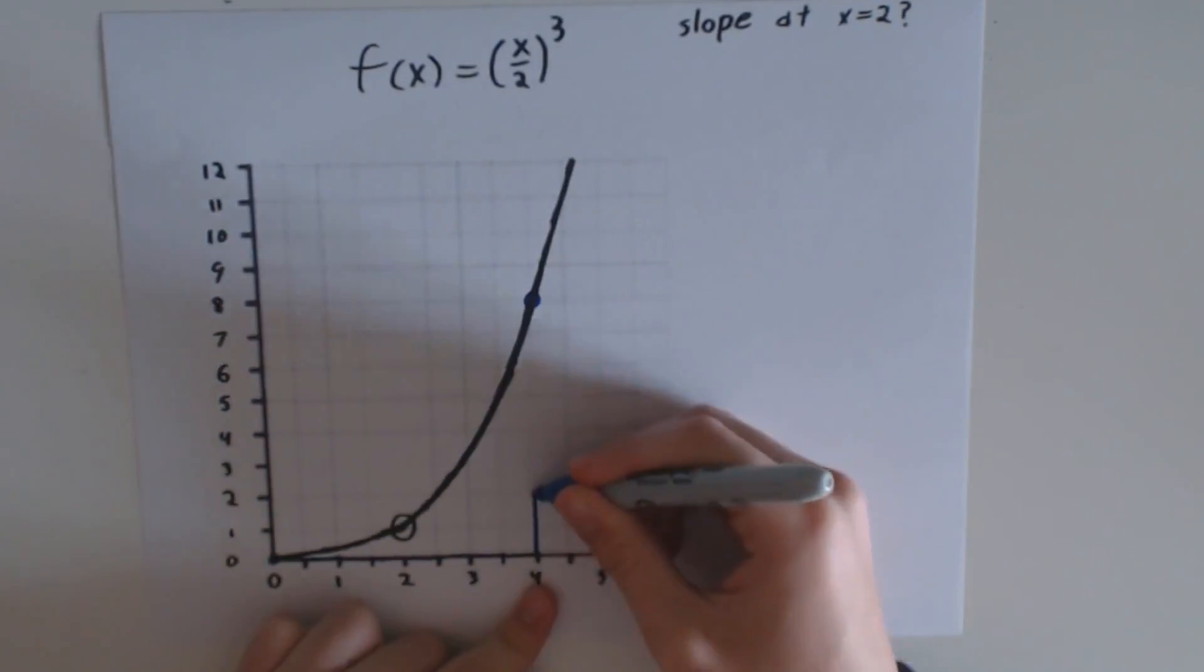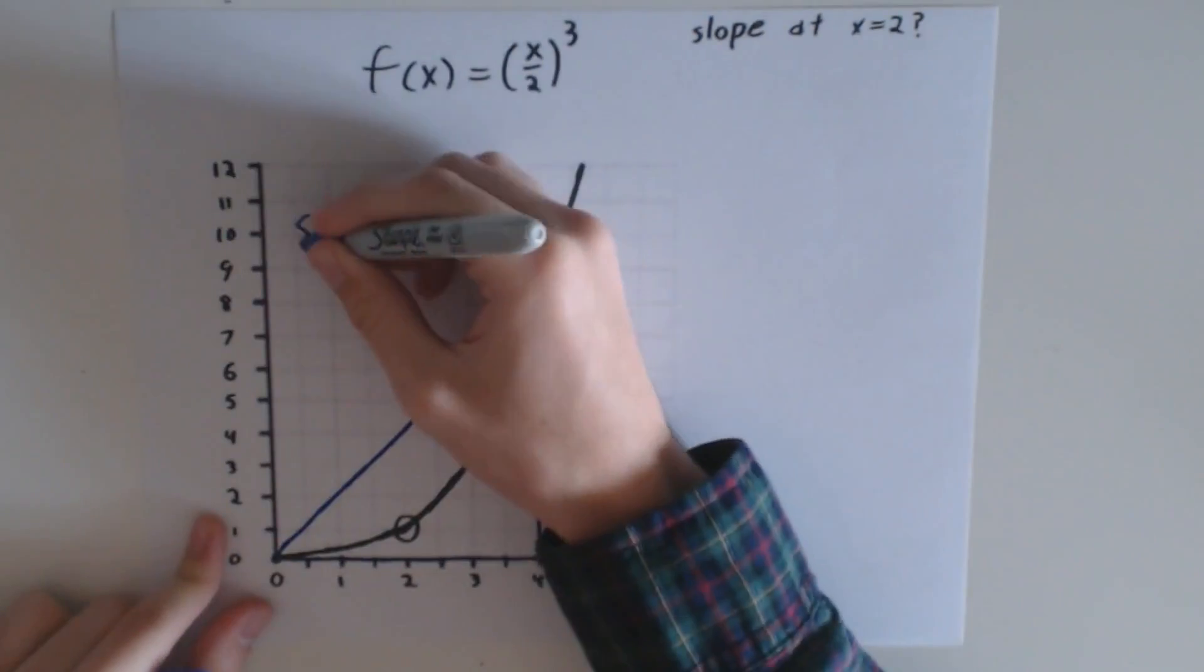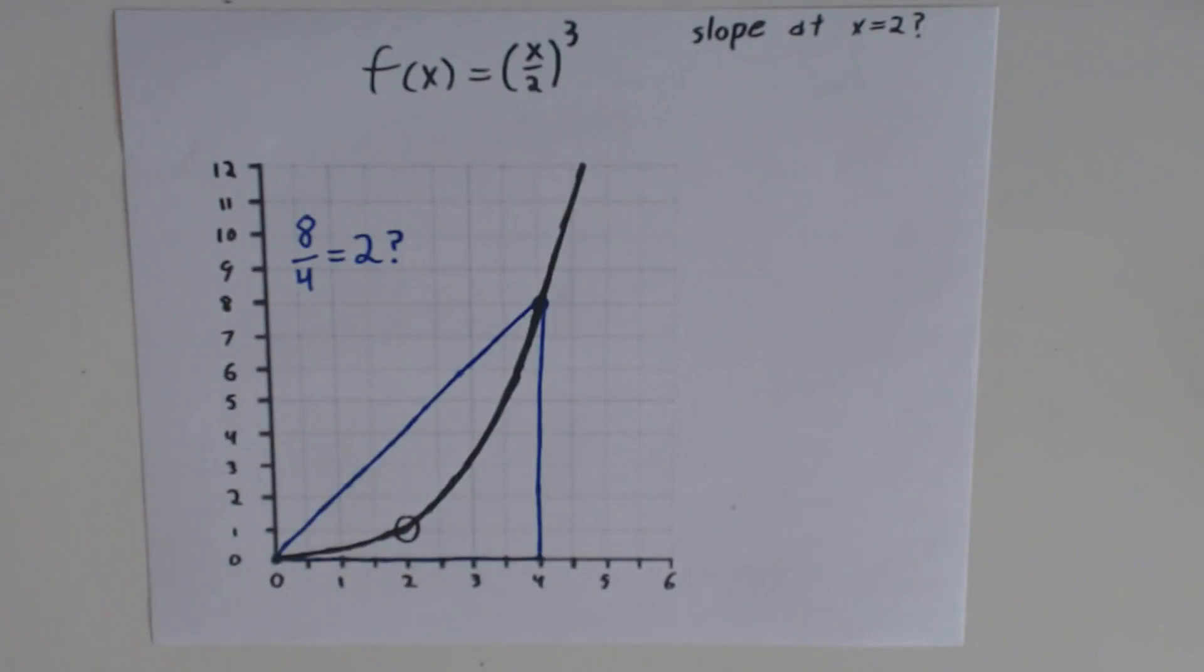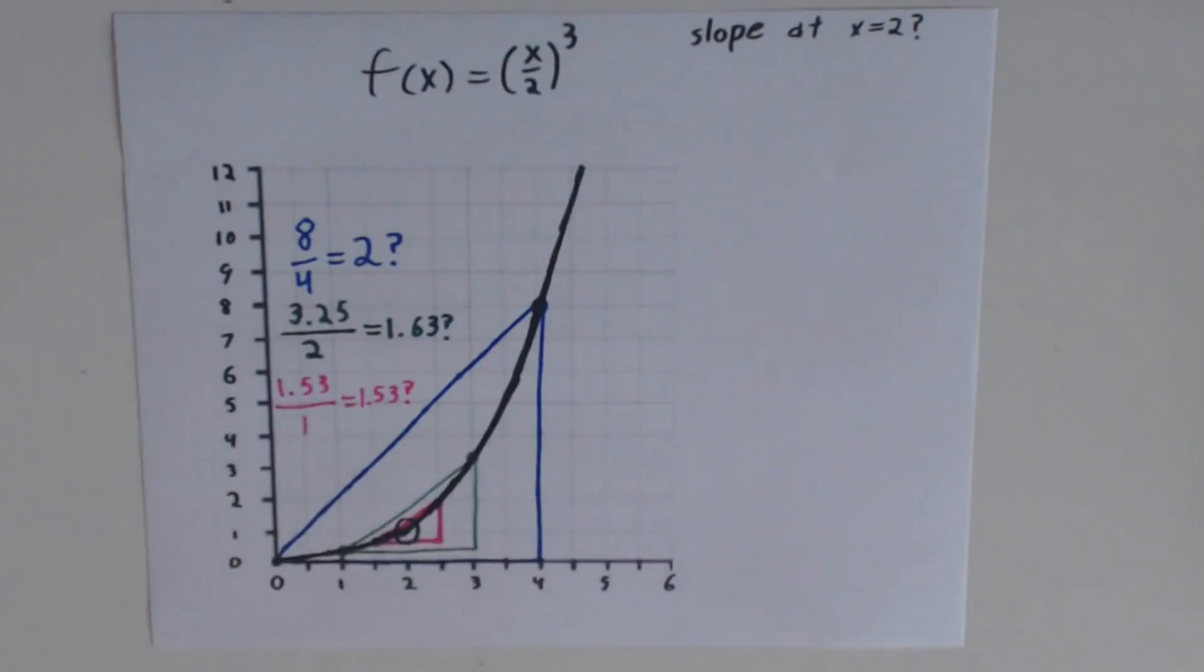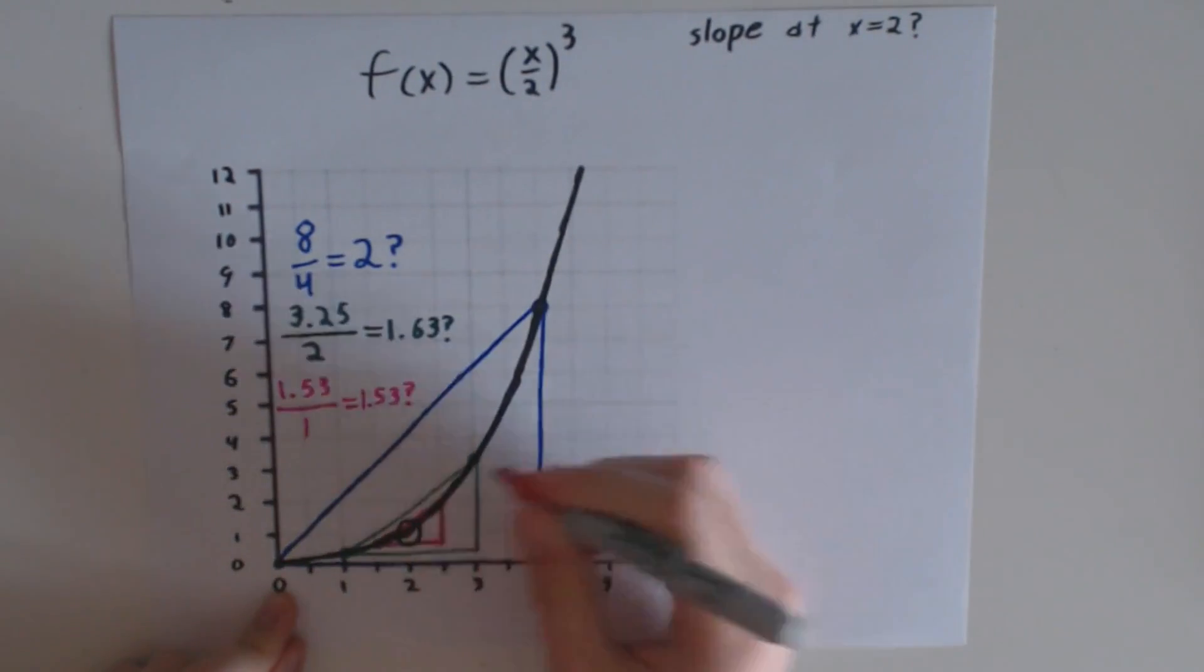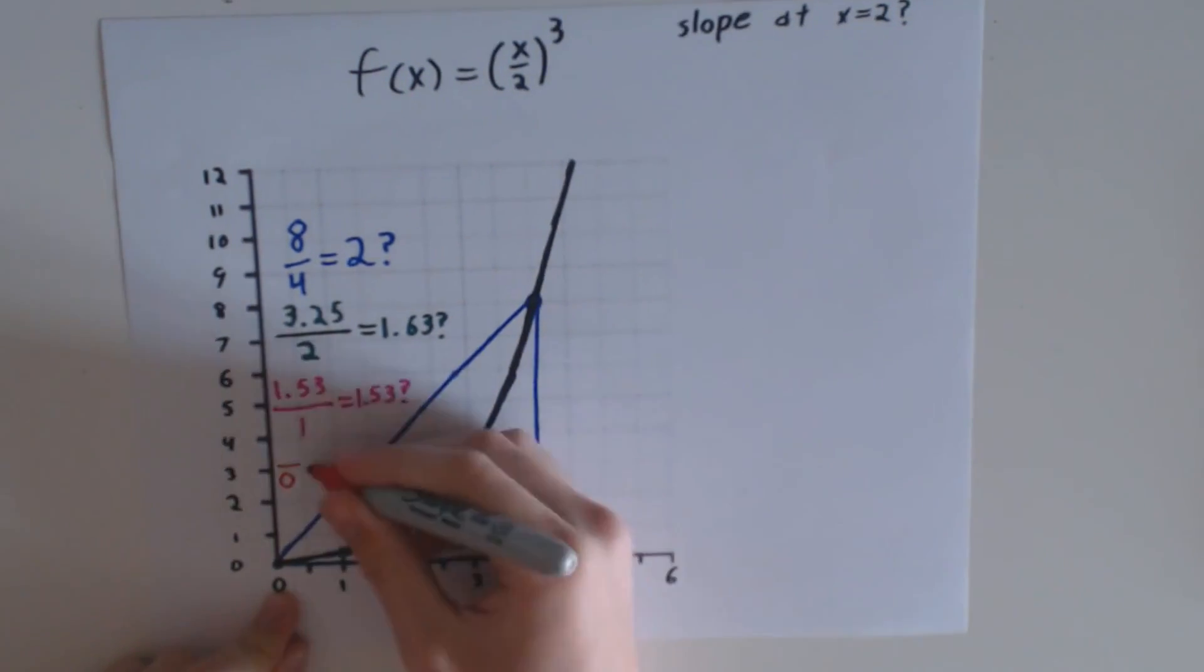We can draw a triangle that connects two nearby points, and the slope we get is pretty close to the real answer, but it's not perfect. If we make our triangle smaller and smaller, we get closer to the actual value of the slope. But when we try to make our triangle so tiny that it's right on the point, we run into a problem.